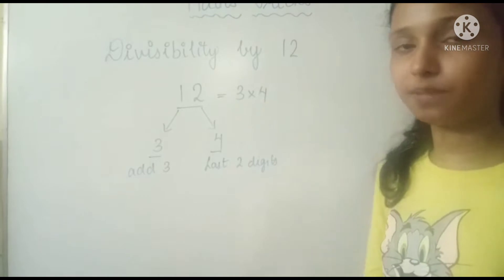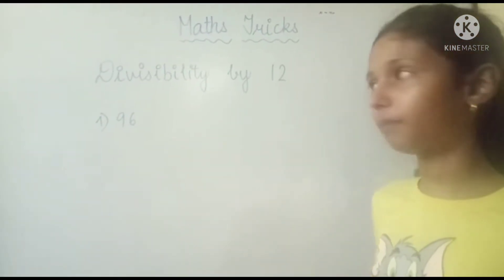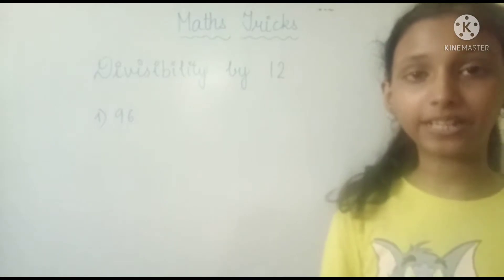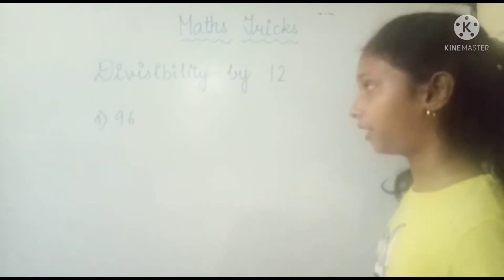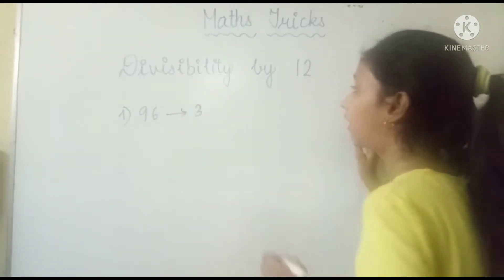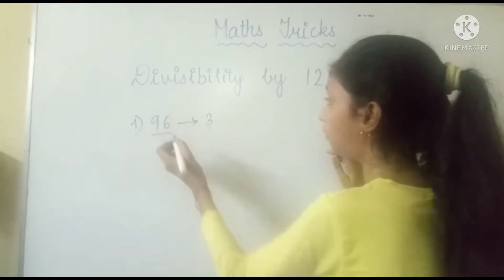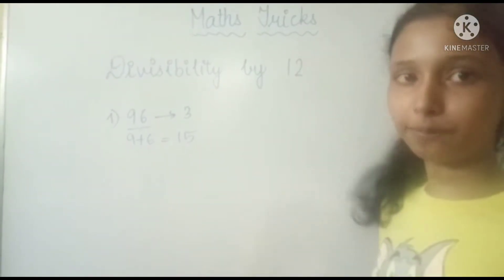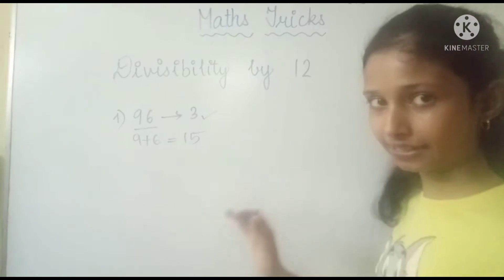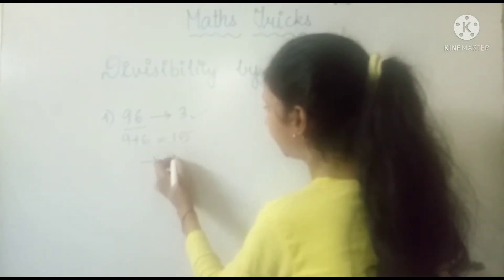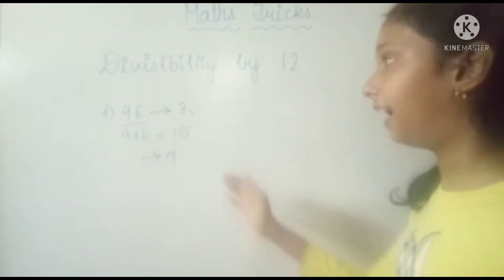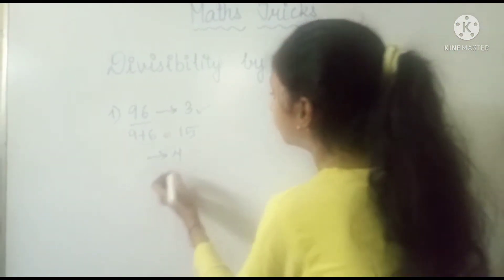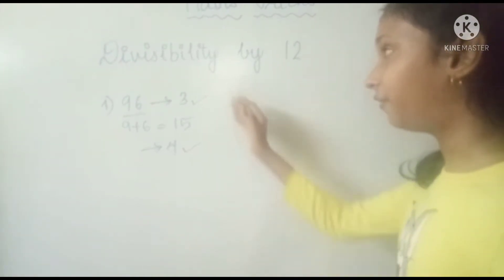Let's take the first example: 96. We know 96 is divisible by 12, but we have to check with the rule. First, check if it's a multiple of 3: 9 plus 6 equals 15, and 15 comes in the table of 3 — criteria fulfilled. Next, check the last two digits: 96 comes in 4's table — also fulfilled. Both criteria are met, so 96 is divisible by 12.